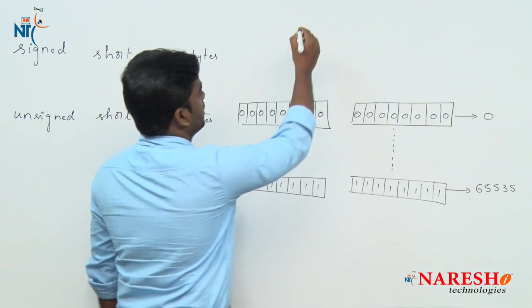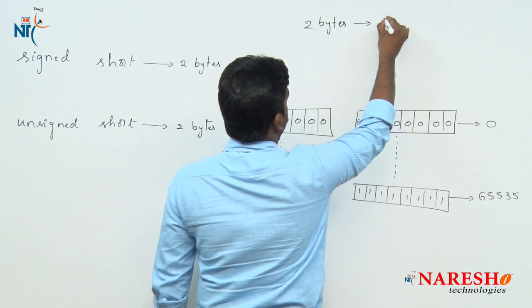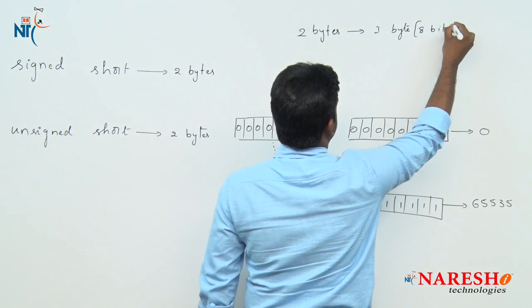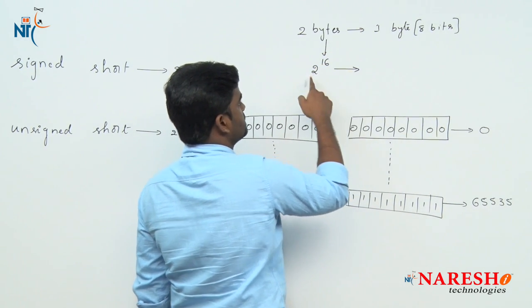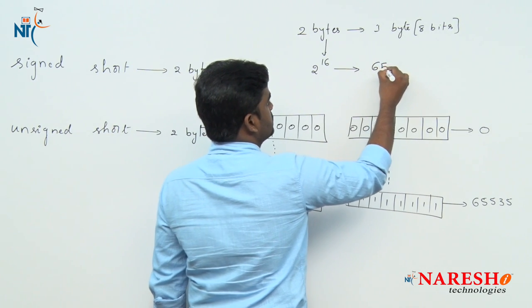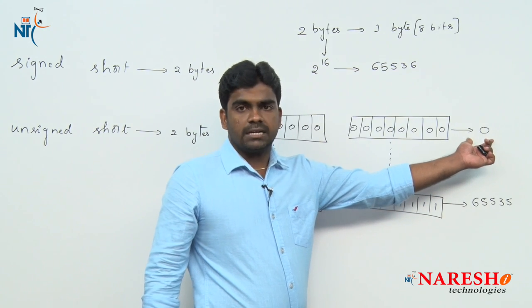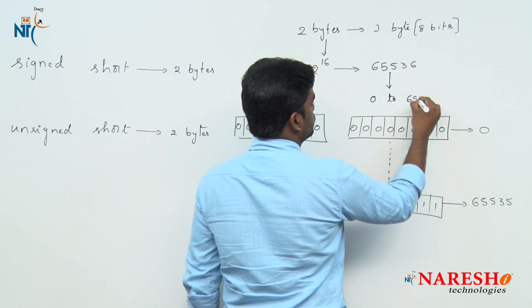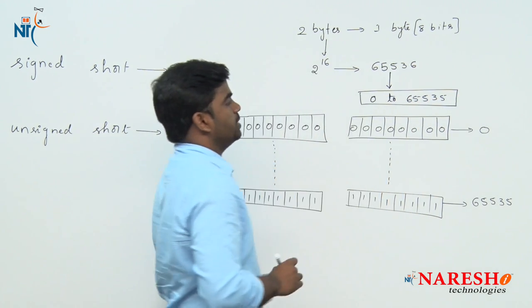Using two bytes means one byte equals 8 bits, so two bytes is 16 bits. We calculate 2 power 16, which is 65536, but since storing starts with 0, the range is 0 to 65535.